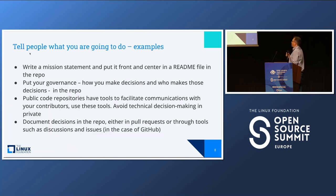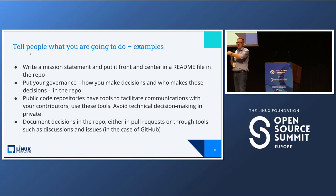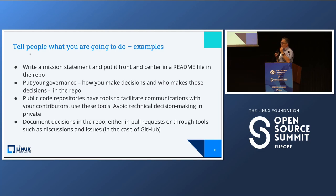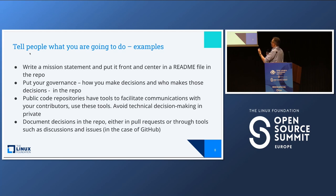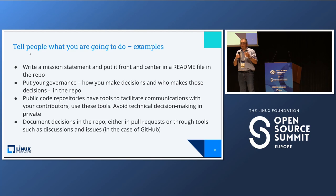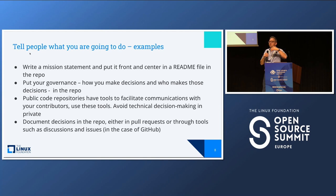More examples on telling people what you're going to do: write a mission statement and put it front and center in the repo README file. Put your governance — how you make decisions and who makes them — in the repo. Public code repositories have tools to facilitate communication; use those. Avoid technical communications in private. GitHub issues, GitHub discussions, GitHub actions — all of these can be very useful in facilitating communications.